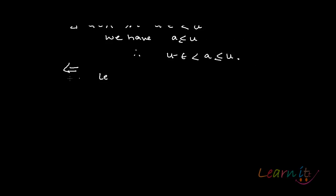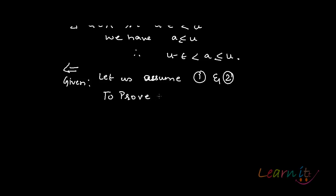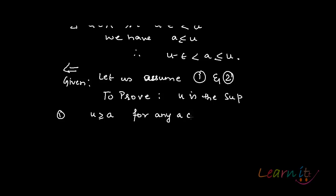Now the other way round. What are we given? Let us assume conditions 1 and 2, and we need to prove that U is the supremum. From condition 1, we have that U is greater than or equal to a for any a, which means U is an upper bound.